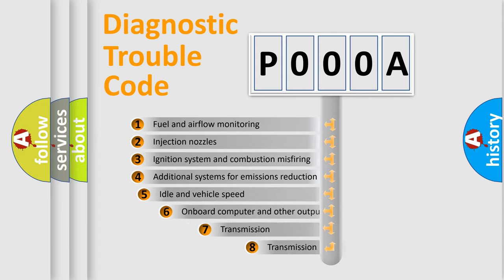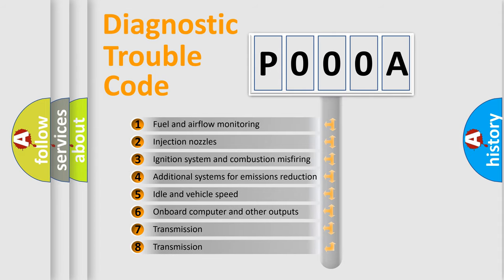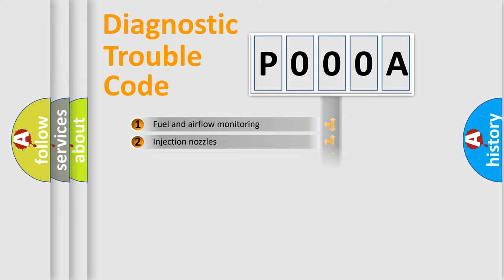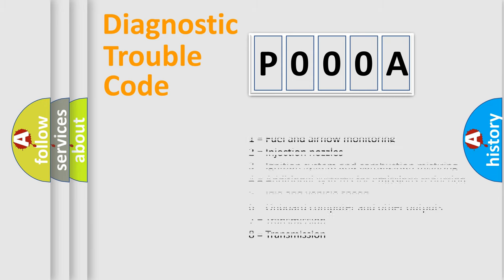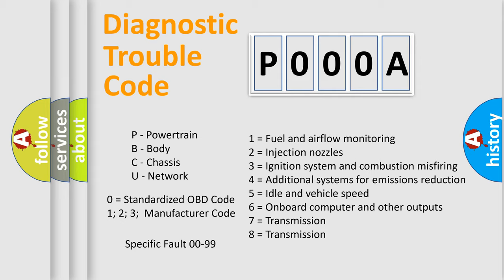The third character specifies a subset of errors. The distribution shown is valid only for the standardized DTC code. Only the last two characters define the specific fault of the group. Let's not forget that such a division is valid only if the second character code is expressed by the number zero.